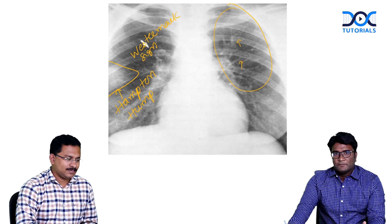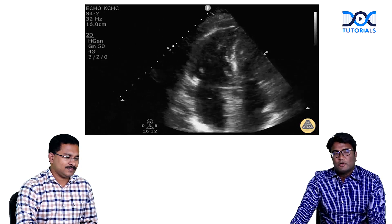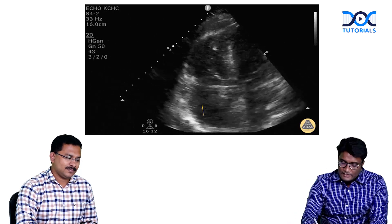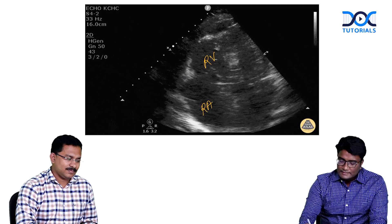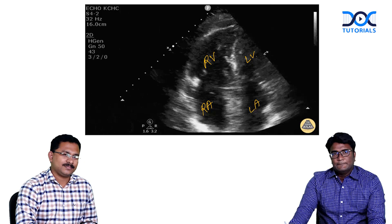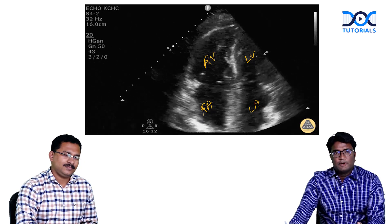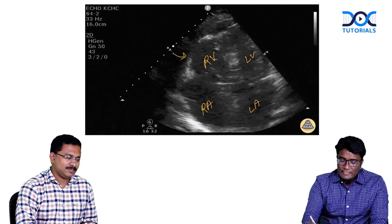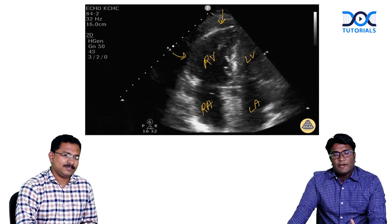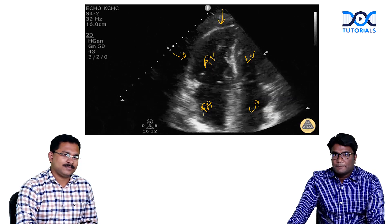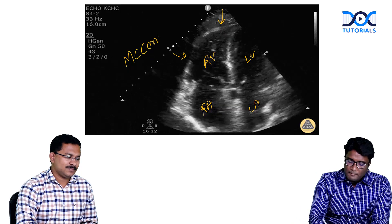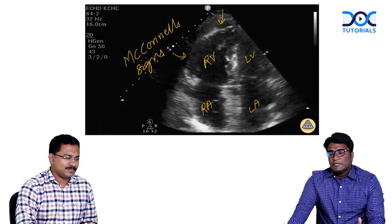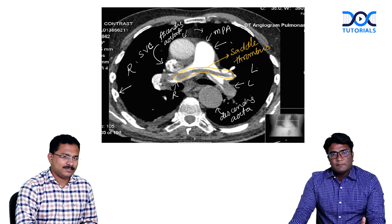An echo was done in this patient. Looking at the echocardiography image, identify the anatomy: right atrium, right ventricle, left atrium, and left ventricle. Looking at the contraction of the right ventricle, the free wall of the right ventricle is showing hypokinesia - it is not contracting that much - but only the apical segment is contracting well. This right ventricular free wall hypokinesia with apical sparing is called the McConnell sign. McConnell sign on echo is suggestive of pulmonary thromboembolism. The investigation of choice for pulmonary thromboembolism is CT pulmonary angiography.